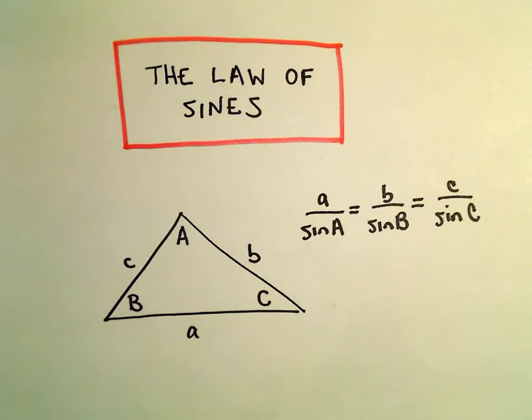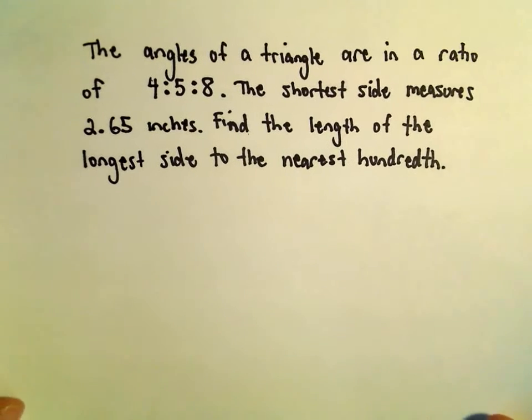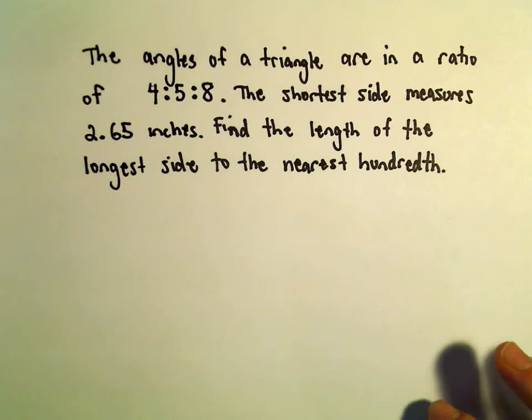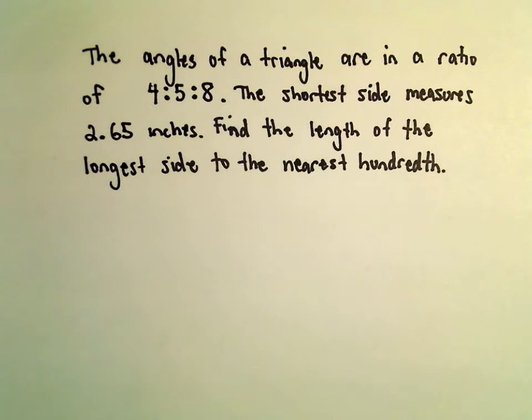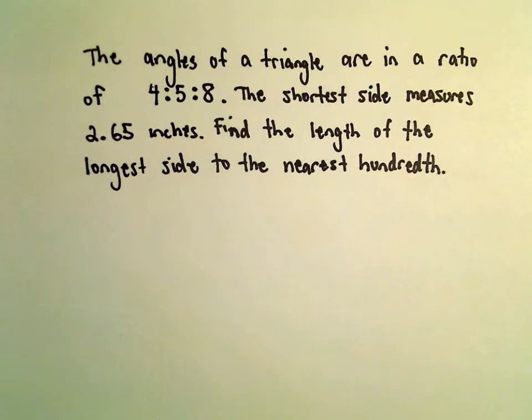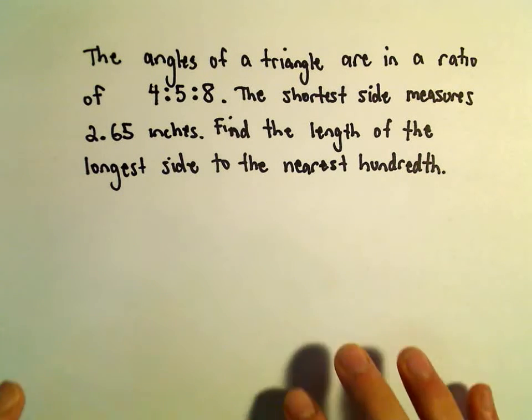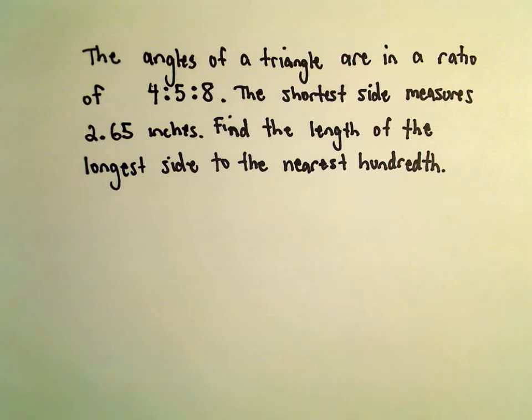Alright, so one more example here using the Law of Sines. Suppose we know the angles of a triangle are in a ratio of 4 to 5 to 8. The shortest side is going to have a measure of 2.65 inches. We want to find the length of the longest side to the nearest hundredth.